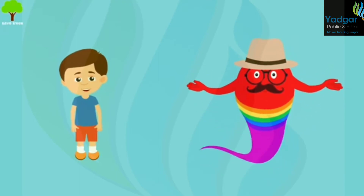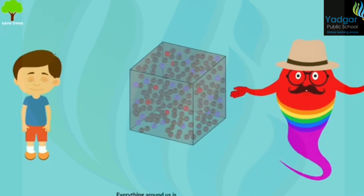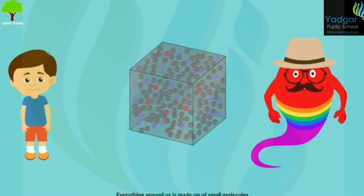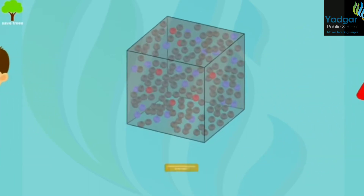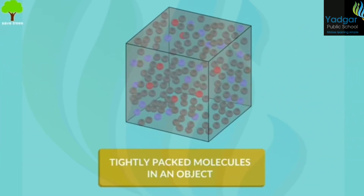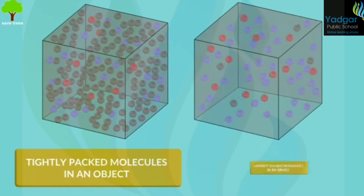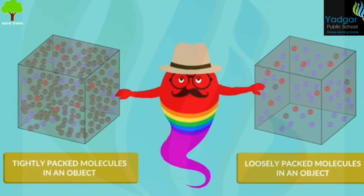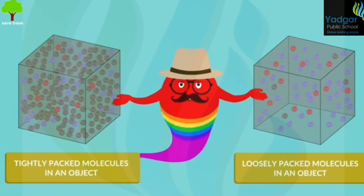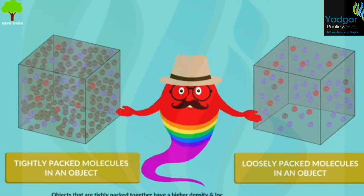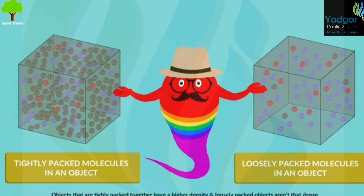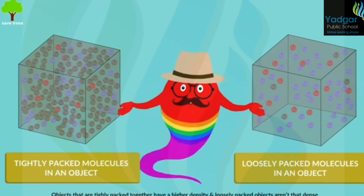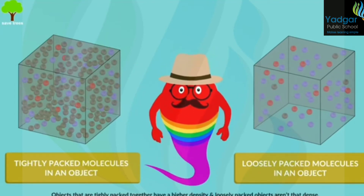Let me explain this. Everything around us is made up of small molecules. In some objects, tiny molecules are tightly packed together, and in others, they are loosely packed together. This is what density means. Objects that are tightly packed together have a higher density, and more loosely packed objects aren't that dense.